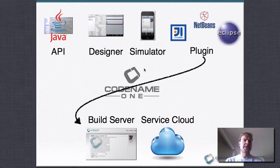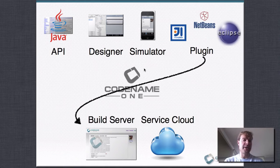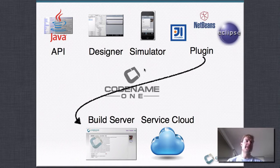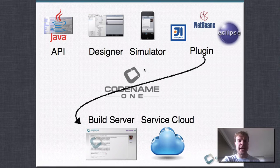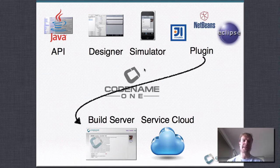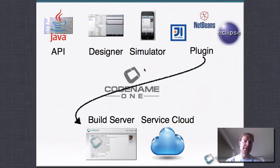A look at the toolchain and how Codename One works — you might be wondering how we write a Java app that runs on iPhone, since iPhone won't run Java. We've got the Java API, a GUI designer to lay out the UI in a WYSIWYG fashion, and a simulator that lets you run it immediately. When you're ready to build, it sends to our build server where it gets converted into native code — on iOS, down to Objective-C. The finished app is actually native, not running inside an HTML container. It downloads from the cloud. There are also cloud services for debugging, logging, and push integration.